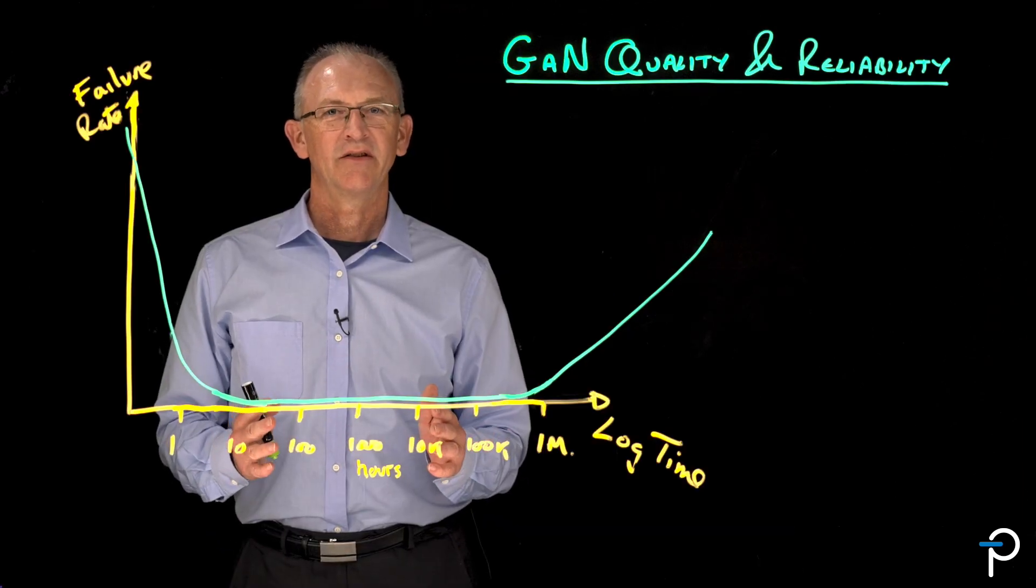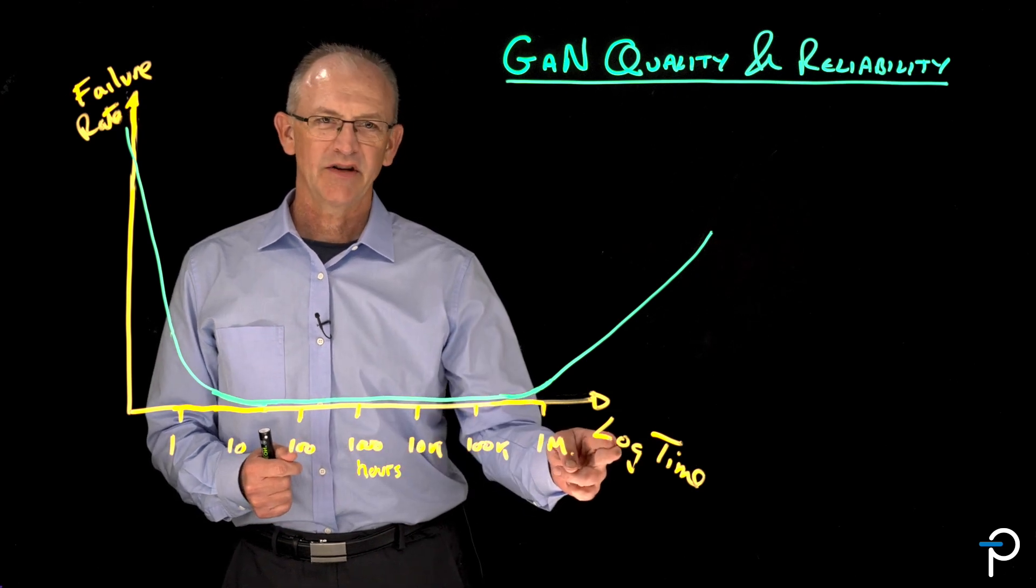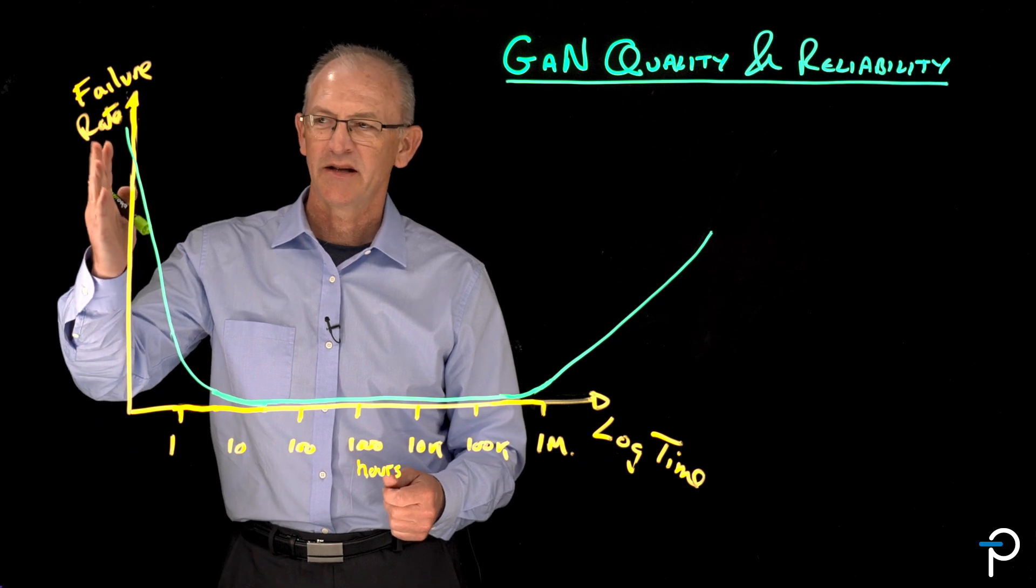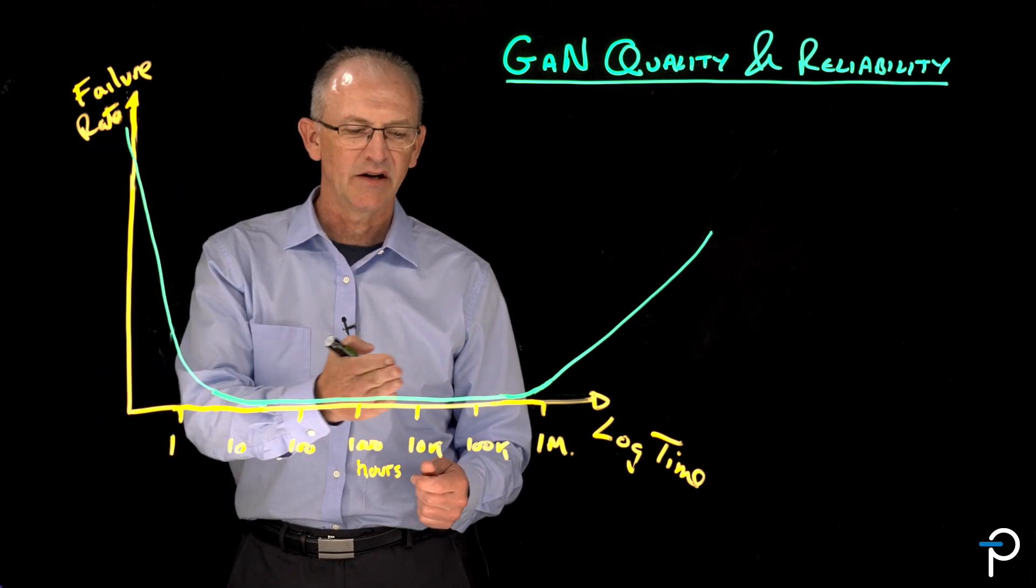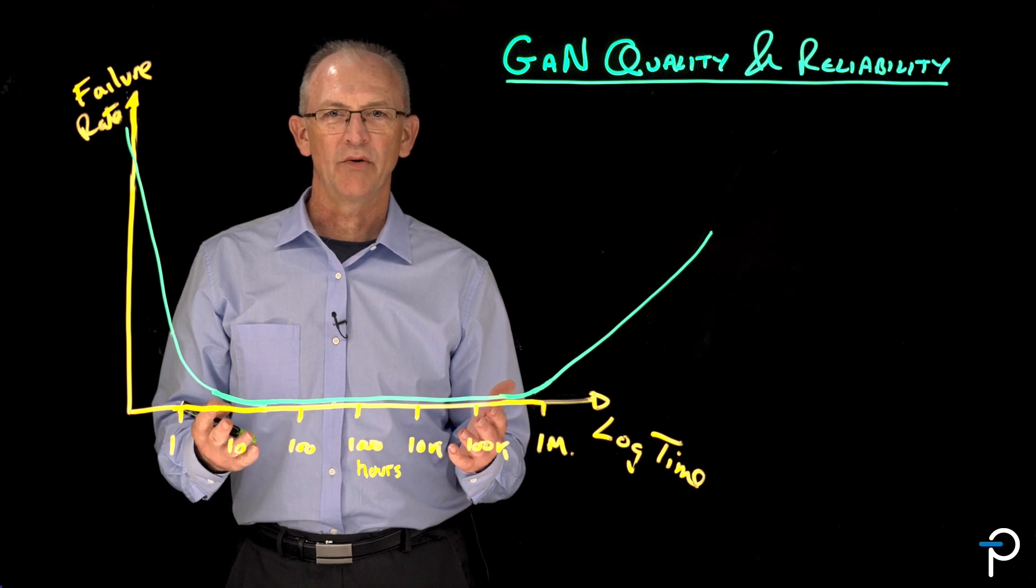So let's take a look at the bathtub curve. On the x-axis here, I have log of time. On the y-axis, failure rate, and then the green line here is the rate of failure of a typical product over time.